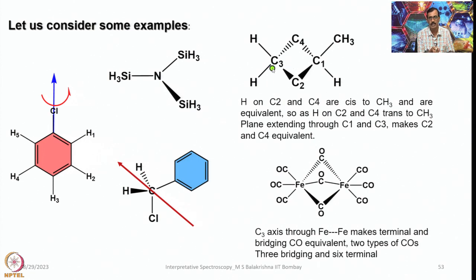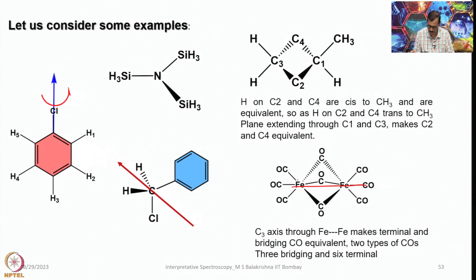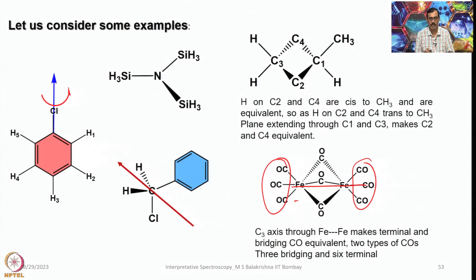Considering another example, the hydrogens on C2 and C4 relative to C3 — C2 and C4 are made equivalent by symmetry through C3. In a ferrocene-type structure, the axis through the Fe–Fe bond makes terminal and bridging positions equivalent — these three are equivalent and those three are equivalent. This is how we identify whether symmetry operations make nuclei indistinguishable.